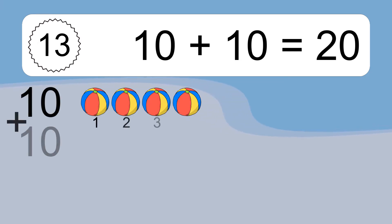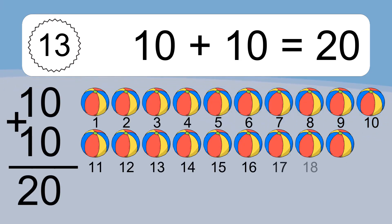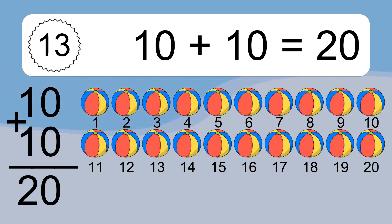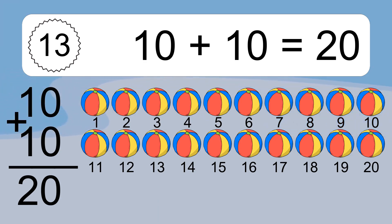10 plus 10 equals what? 10 plus 10 equals 20. Let's count it: 1, 2, 3, 4, 5, 6, 7, 8, 9, 10, 11, 12, 13, 14, 15, 16, 17, 18, 19, 20.